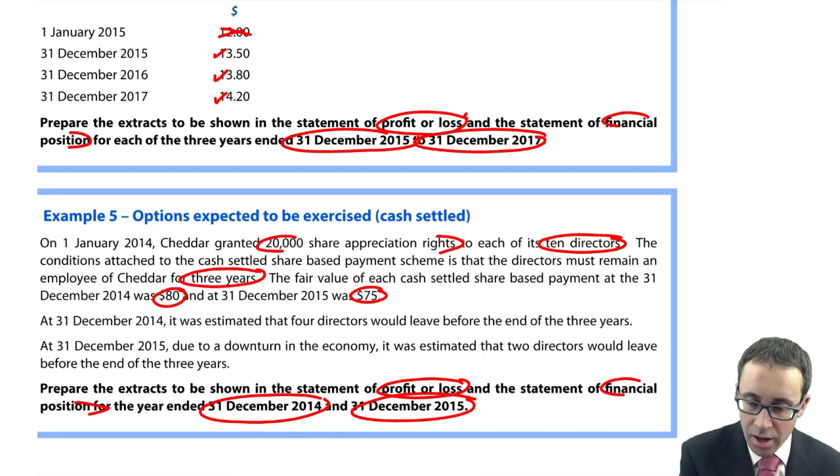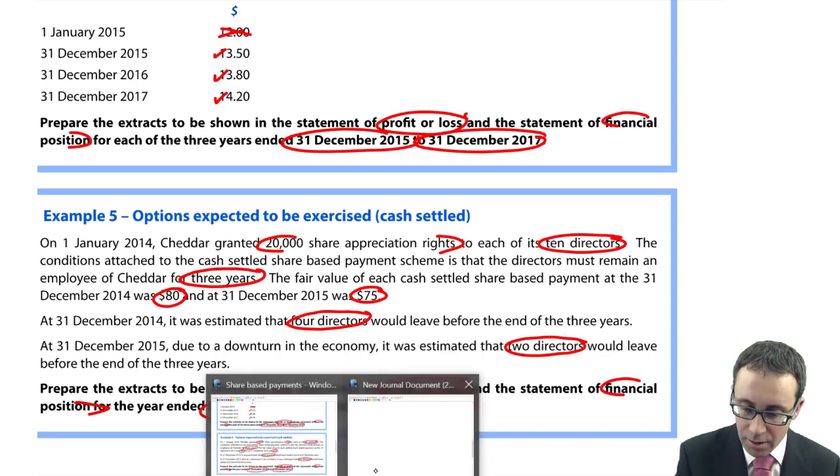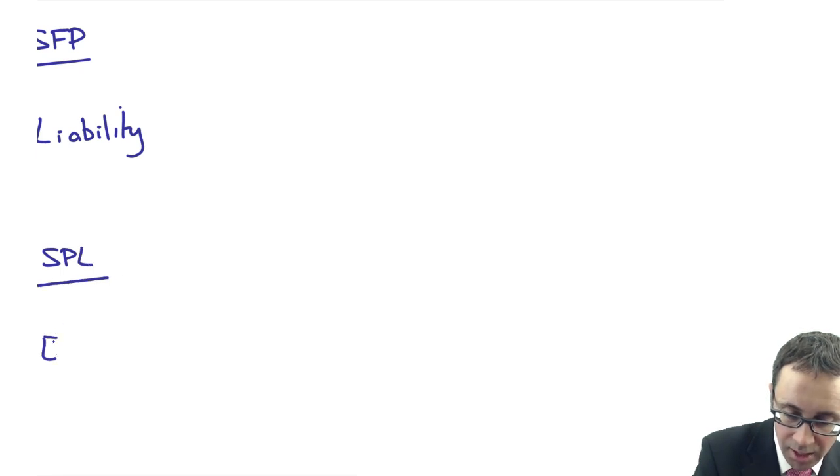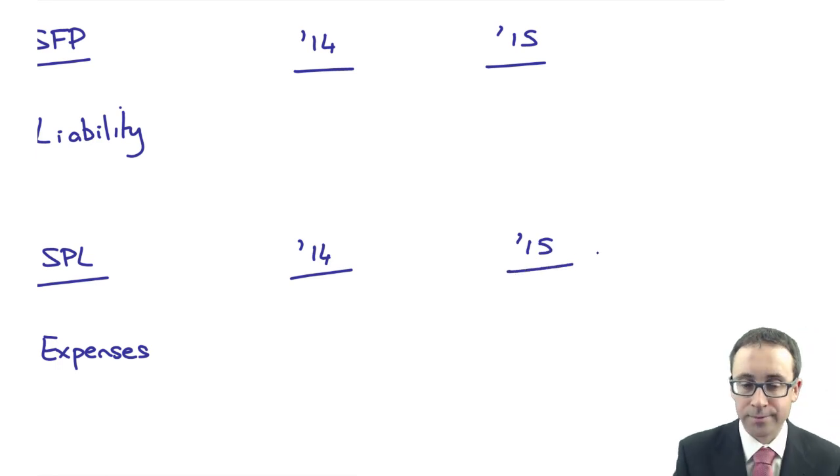Here we granted 20,000 share appreciation rights to 10 of its directors. The conditions are that the directors must remain for three years. And the fair value at the first reporting date is 80, and it is 75 at that second reporting date. Four directors are expected to leave by the end of the year after the first year. And then here, change it up ever so slightly, two directors we expect to have left by the end of the vesting period.